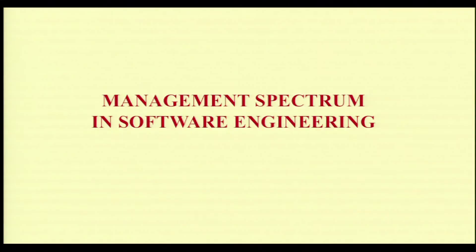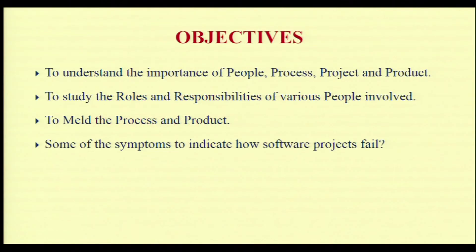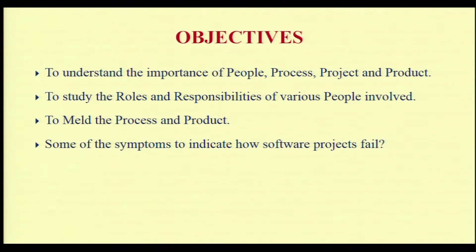Welcome to the UGC lecture series in Computer Science. In this series of lectures, we have been looking at the subject software engineering. In today's session, we will be looking at the management spectrum in software engineering. The objectives of today's session include: first, we will try to understand the importance of four P's — people, process, project and product. We will also study the roles and responsibilities of various people involved in project development, how to meld the process and the product, and finally why software projects fail.